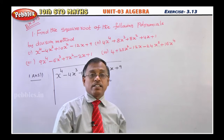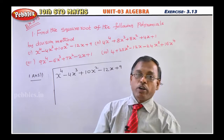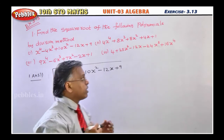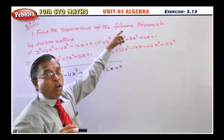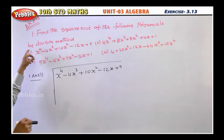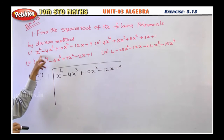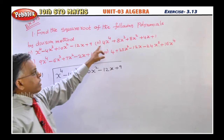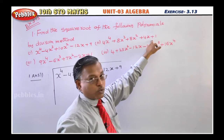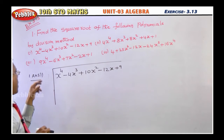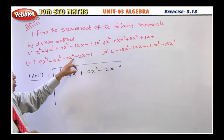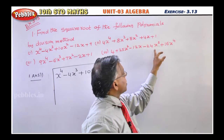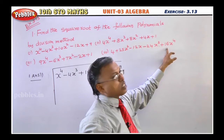This is a very important exercise from the examination point of view, but very easy. Exercise 3.13: Find the square root of the following polynomials by division method. First: x⁴ - 4x³ + 10x² - 12x + 9. Second: 4x⁴ + 8x³ + 8x² + 4x + 1. Third: 9x⁴ - 6x³ + 7x² - 2x + 1. Fourth: 4 + 25x² - 12x - 24x³ + 16x⁴.